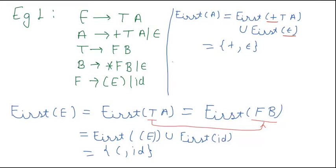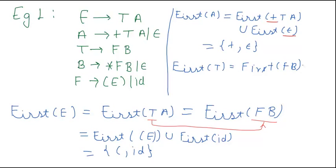Similarly, we can calculate First(T). First(T) is already calculated — it is equal to First(FB), which we have already calculated previously to give {bracket open, id}.